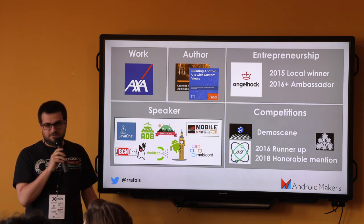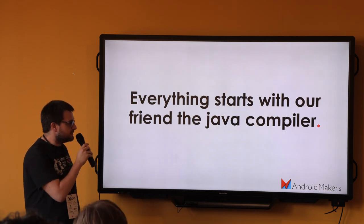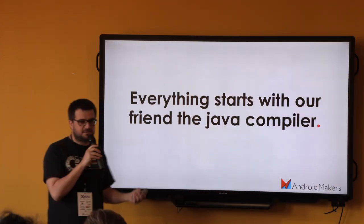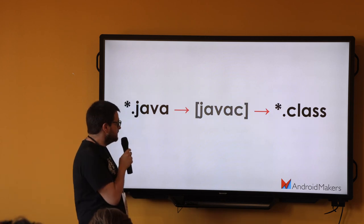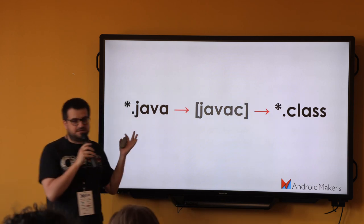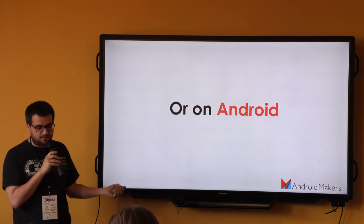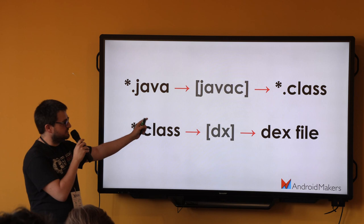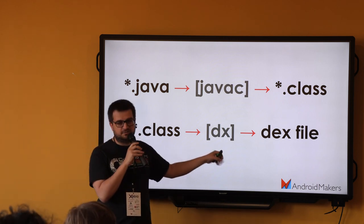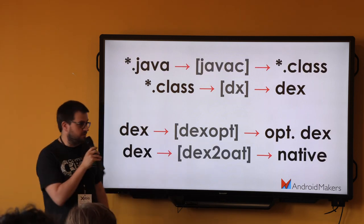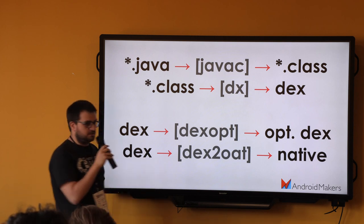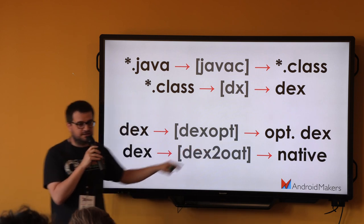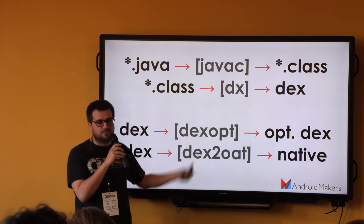Let's talk about Java, bytecode, and Android. Everything starts with the Java compiler. We've got nice tools like Android Studio, but everything starts with Java C. From Java, we need the Java C compiler to get all class files. On Android, one step further — it was Java, then Java C, and then the class files were converted to the DEX file. On Dalvik it was converting on the desktop, optimizing the DEX file, and then on ART it was converting to native.